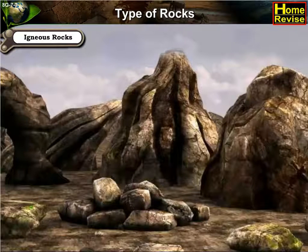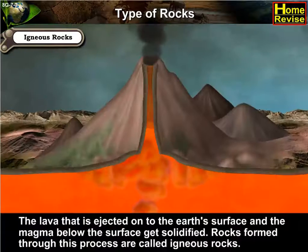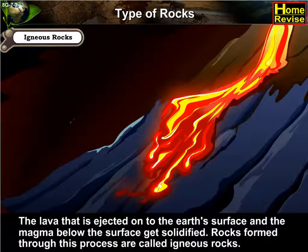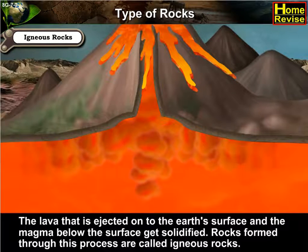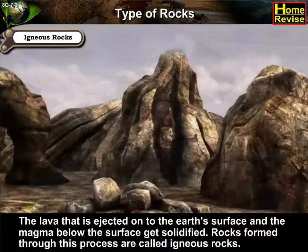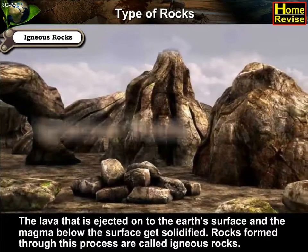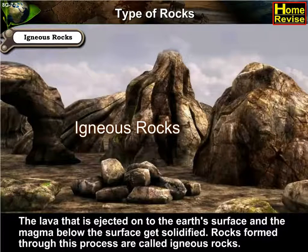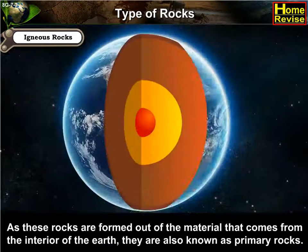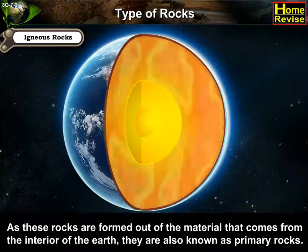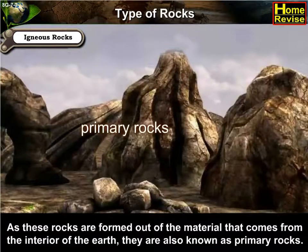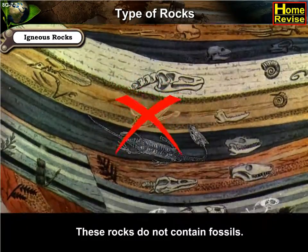First, Igneous Rocks. The lava that is ejected onto the Earth's surface and the magma below the surface get solidified. Rocks formed through this process are called Igneous Rocks. As these rocks are formed out of the material that comes from the interior of the Earth, they are also known as Primary Rocks. These rocks do not contain fossils.